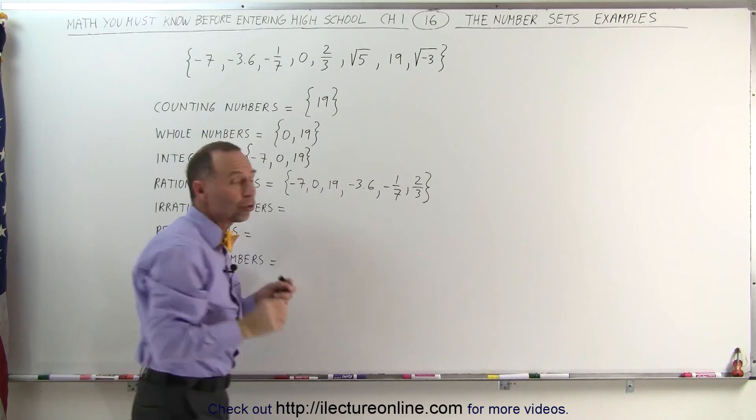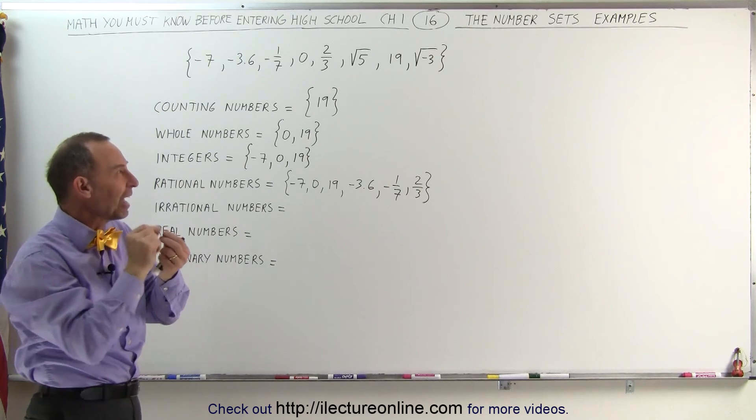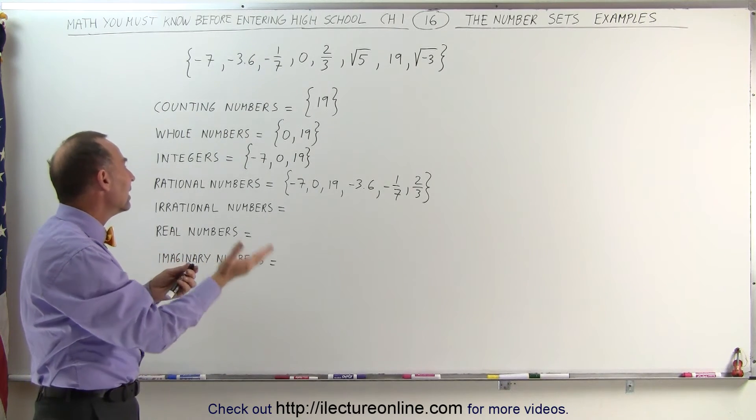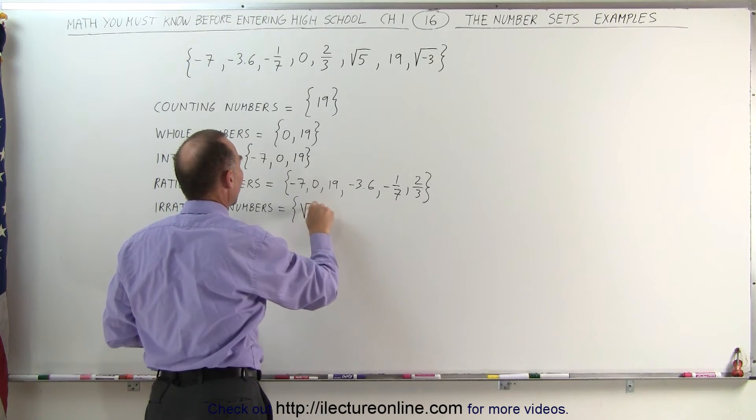Because even though the square root of 5 is on the number line, we cannot find the exact value of that number. That makes it an irrational number. So this would then be the square root of 5.